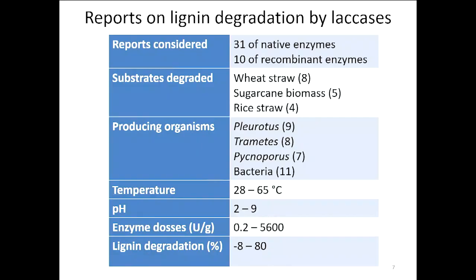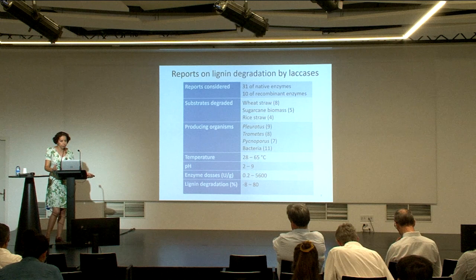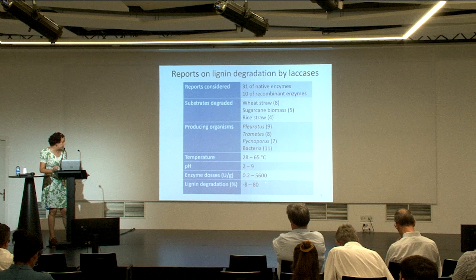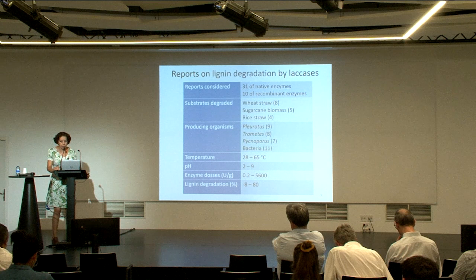Regarding the pretreatment conditions, we found that the authors report very different conditions to pretreat or degrade lignin using laccases. The temperature ranges from 28 to 65 degrees Celsius, and the pH goes from 2 to 9. Also, the enzyme doses were very different — the lowest we found was only 0.2 units of laccase per gram of substrate, but the highest was 5,600 units of laccase per gram. The results obtained are also very different. Some authors report negative values on lignin degradation, meaning that at the end of the pretreatment they have more lignin than at the beginning. But there are also good results — some reached 80% degradation.